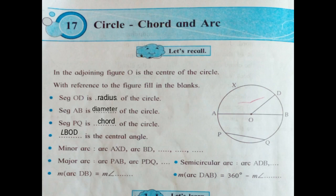Minor arc: arc AXD, arc BD. Two minor arcs arc AXD and arc BD are already given. You have to name other 3 minor arcs. When you name minor arcs, it should be short distance from the chord of a circle. There are altogether 6 minor arcs.